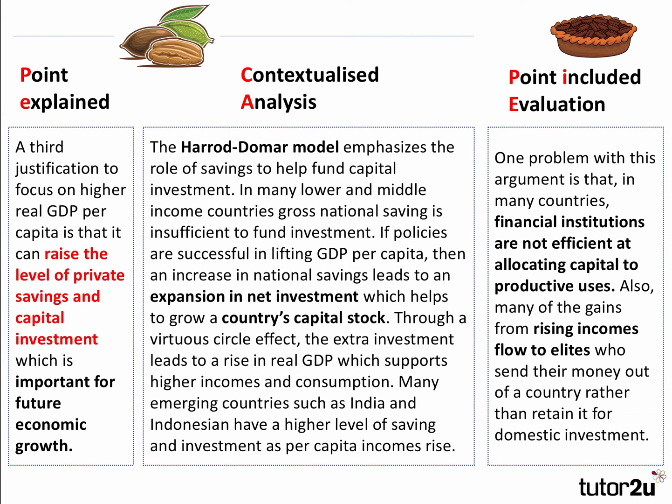However, one problem with this argument: in many countries, financial institutions — banks, stock exchanges — are not efficient at allocating capital to productive users. Many of the gains from rising incomes flow to elites who may send their money out of the country — capital flight — rather than retain it for domestic investment. So an increase in per capita incomes does not necessarily drive investment into productive uses.